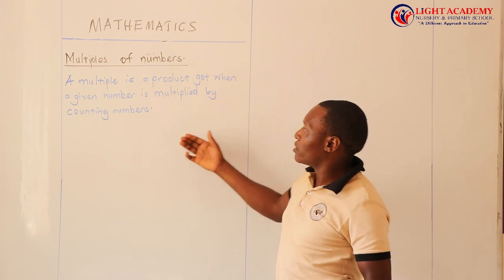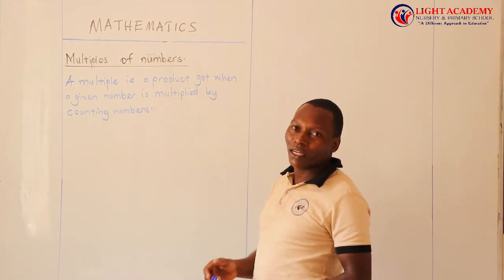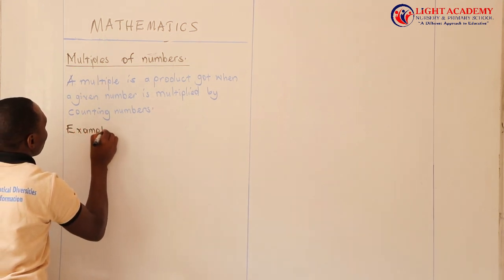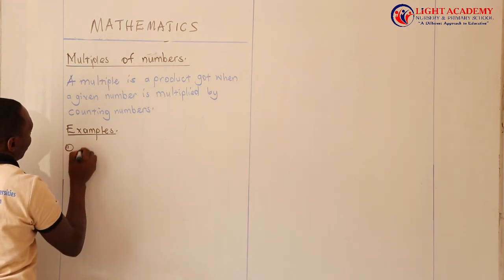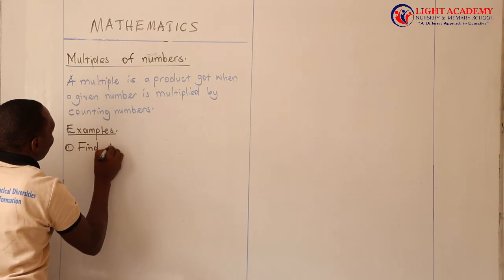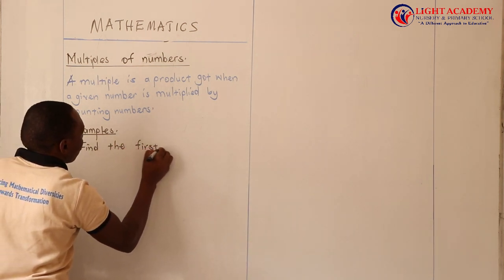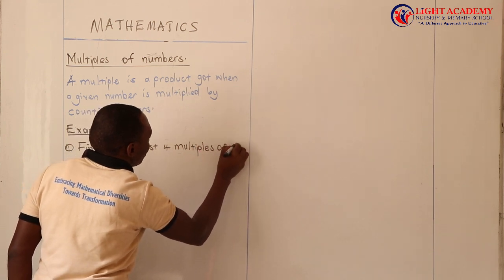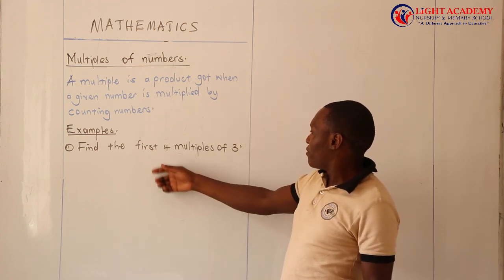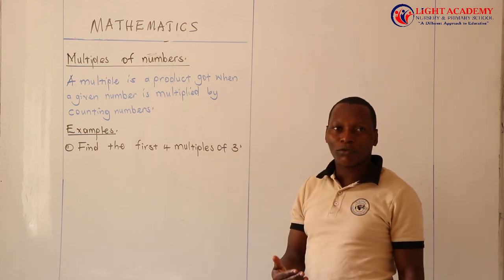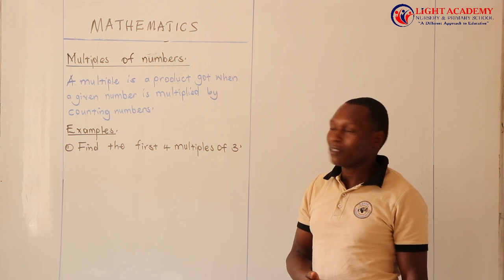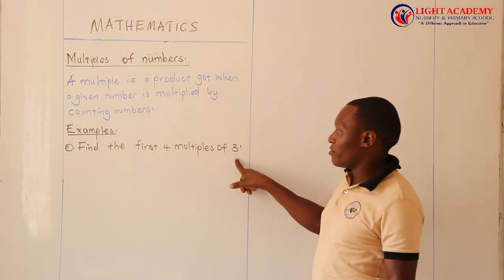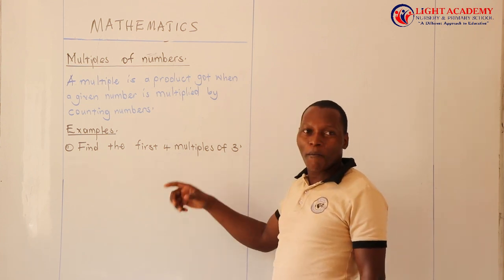So we are saying a multiple is a product got when a given number is multiplied by counting numbers. For example, we can look at some examples here. These are common questions. The first one says: find the first four multiples of three. This is my first question.